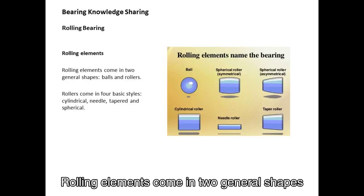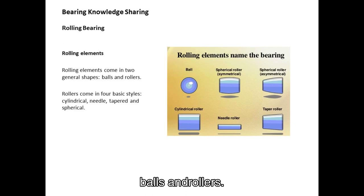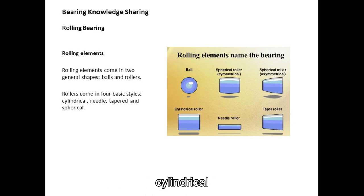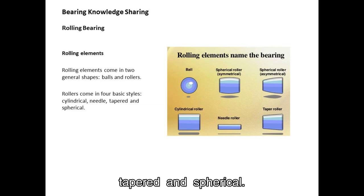Rolling elements come in two general shapes: balls and rollers. Rollers come in four basic styles: cylindrical, needle, tapered, and spherical.